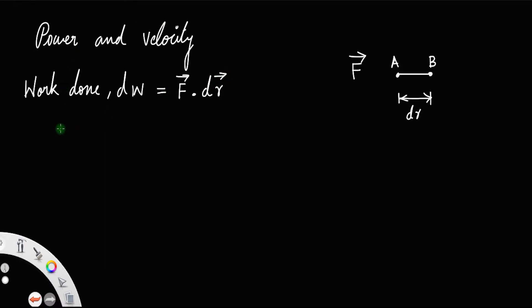But you know power, the term power P, is the rate at which work is done, which means dW/dt. That is, dW equals F dot dR divided by dt, or you can write power P equals F dot dR/dt.